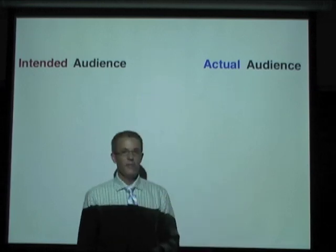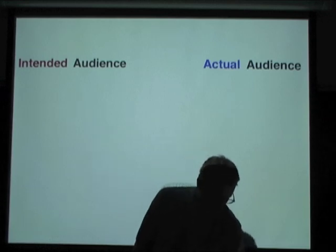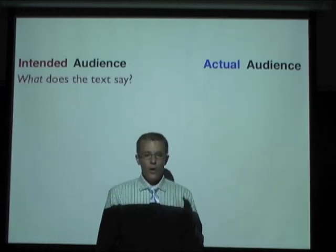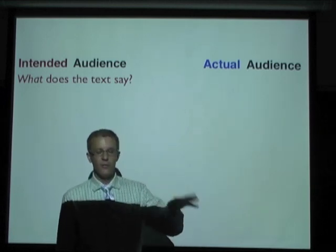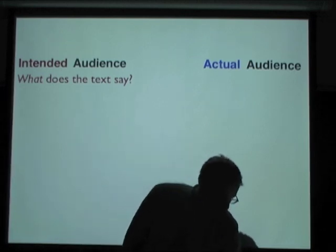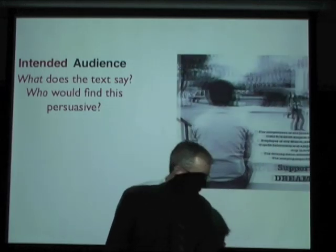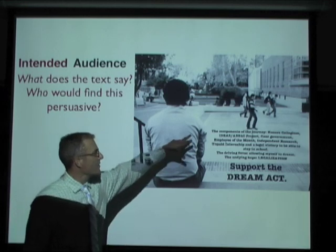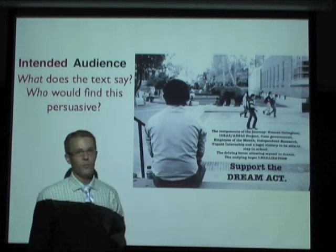What does this mean for you as someone who's interested in rhetorical analysis? When you're looking at a text and trying to figure out who the intended audience is, you should ask yourself: what does the text say? Look at the article or the visual and try to understand what the argument is, and then ask yourself who is likely to find this argument persuasive. Here we have an image that I found. It basically lists all the accomplishments that this young man has had, followed by an argument that you should support the DREAM Act.